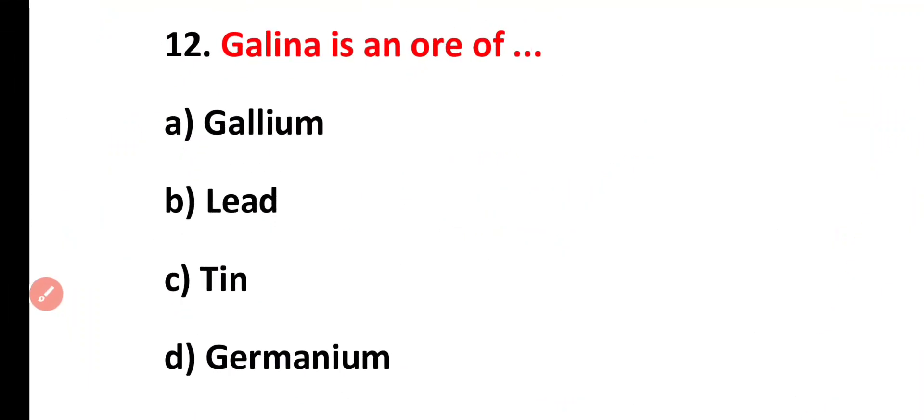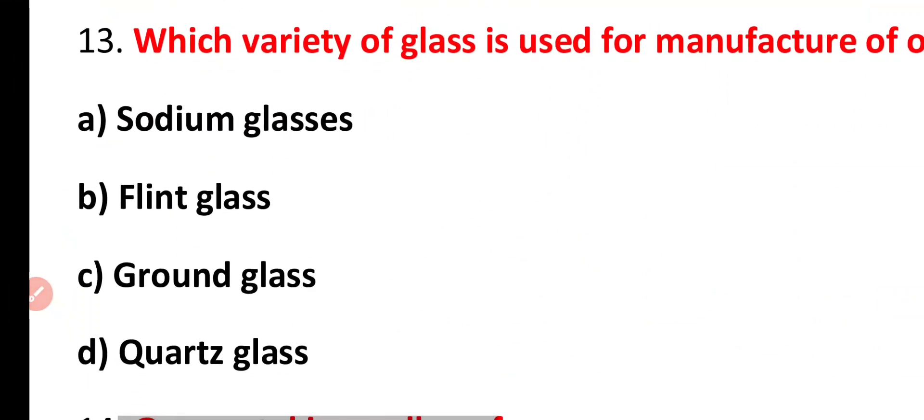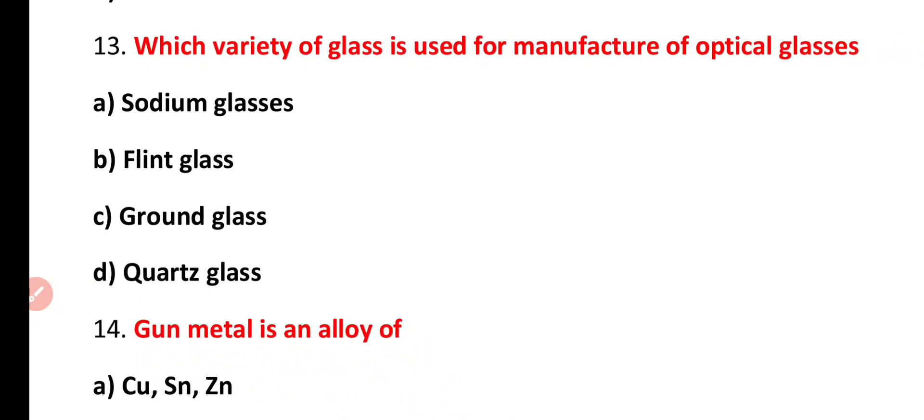Question number 13. Which variety of glass is used for manufacture of optical glasses? Sodium glass, flint glass, ground glass, quartz glass. Correct answer is option B. Flint glass and crown glass are used for manufacture of optical glasses. Flint glass is made by using lead.